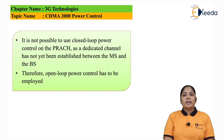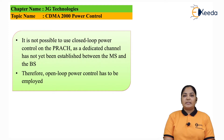Hence, the mobile phone measures the power received in the CCPCH over some time to average out the small scale fading effect.